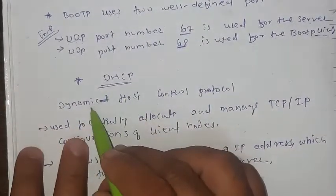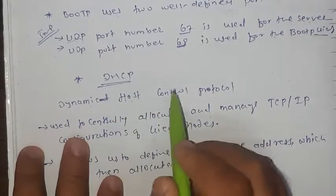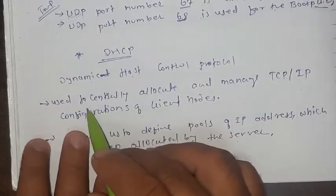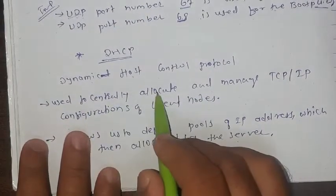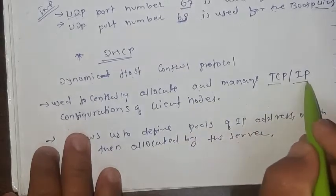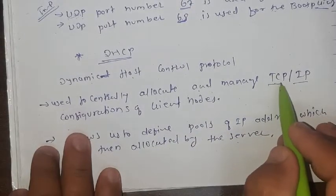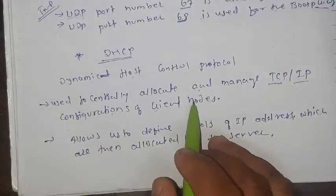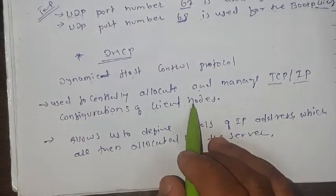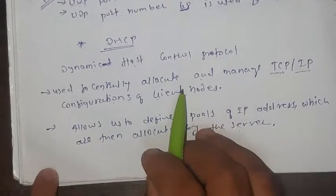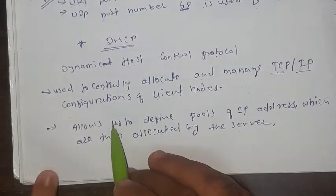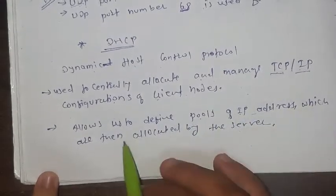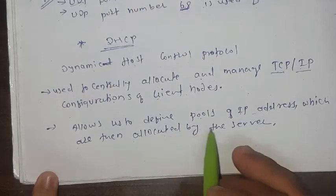The next protocol is DHCP, that is Dynamic Host Configuration Protocol. It's a simple protocol used to centrally allocate and manage TCP/IP — Transmission Control Protocol / Internet Protocol — configurations of a client node, meaning a client end user. It also allows us to define pools of IP addresses which are then allocated by the server.